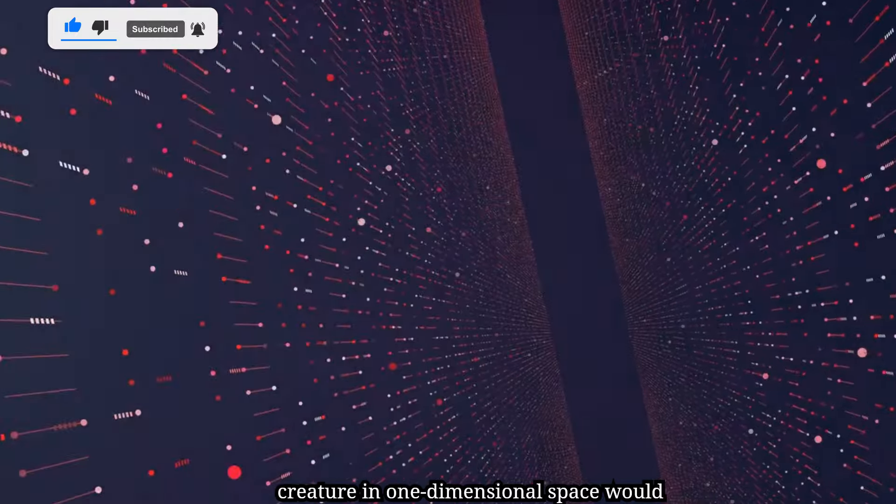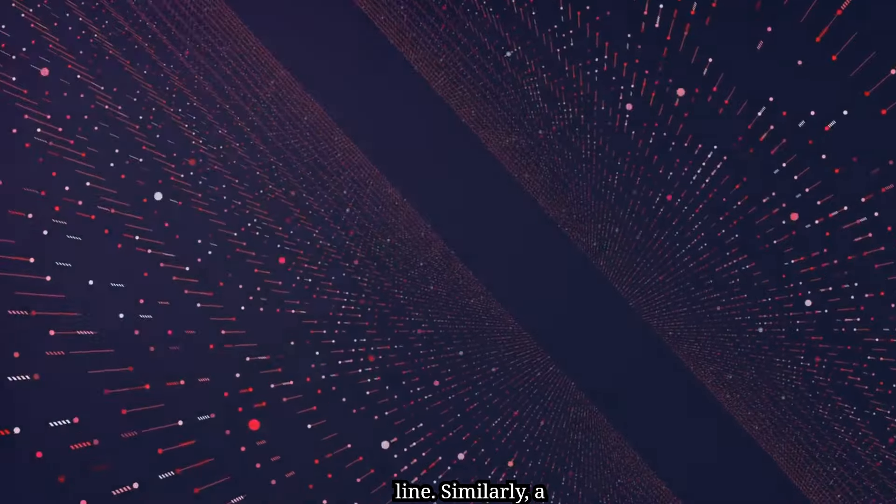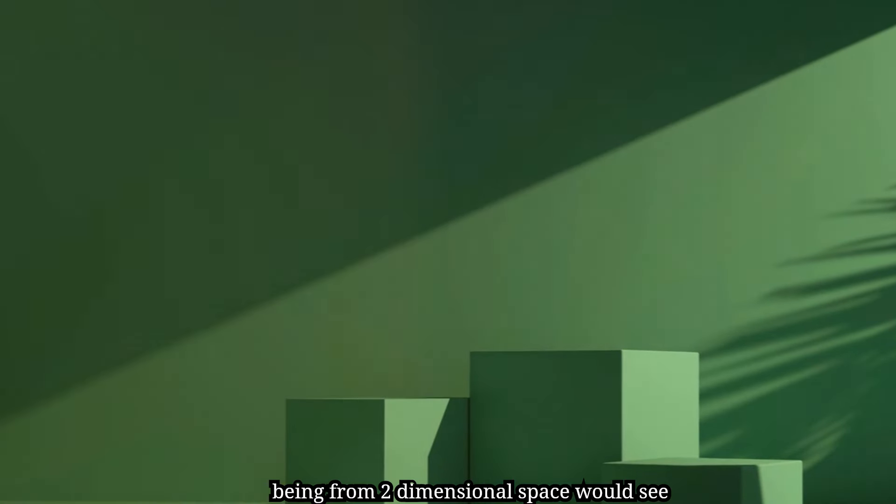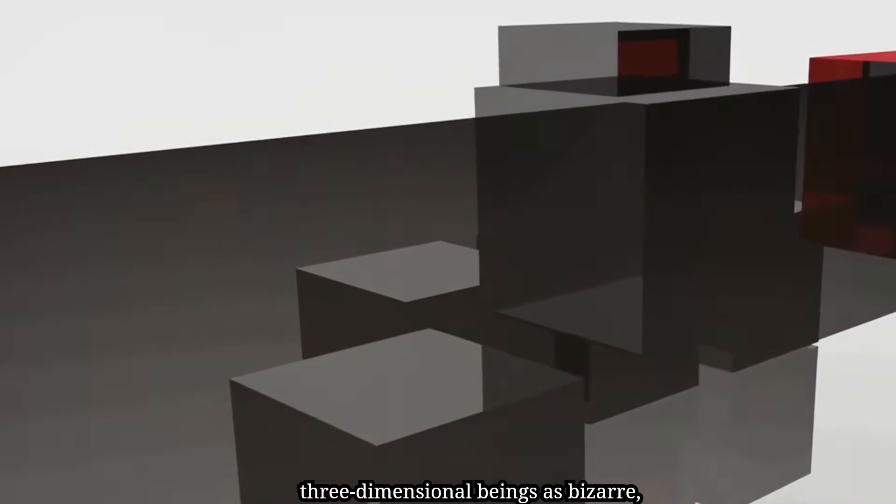A creature in one-dimensional space would perceive a two-dimensional being as a mere line. Similarly, a being from two-dimensional space would see three-dimensional beings as bizarre, flat projections.